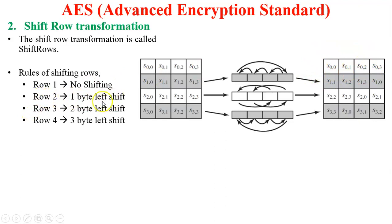Row two has a one-byte left circular shift. So s[1][0] moves to the last position. You can check: s[1][1], s[1][2], s[1][3], and s[1][0] circular left shift. Row three has a two-byte left circular shift. You can check s[2][0], s[2][1], s[2][2], s[2][3] — so s[2][2] comes first and s[2][3] comes next.